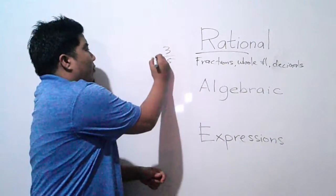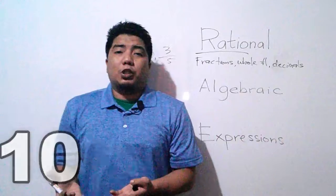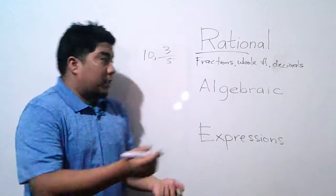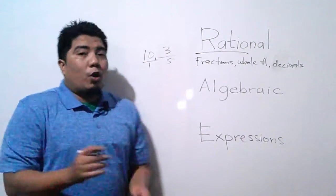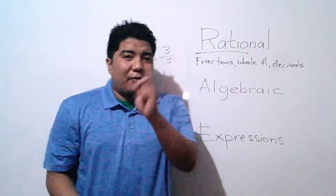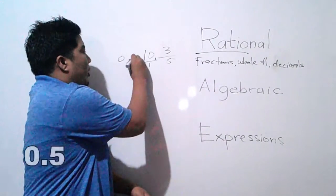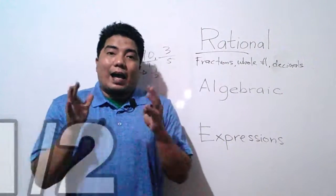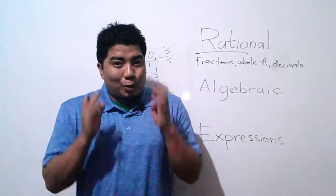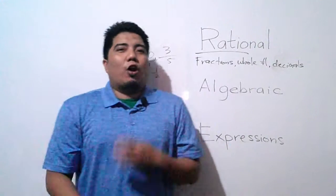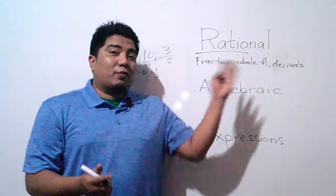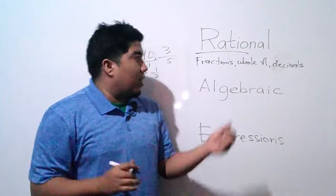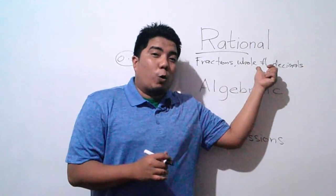For example, 3 over 5 is a rational number because it is expressed as two quantities. Positive 10 is still a rational number because all whole numbers have an invisible 'over 1.' And 0.5, which is convertible to 1 half, is still a rational number. For this lesson, let's focus on fractions and whole numbers.